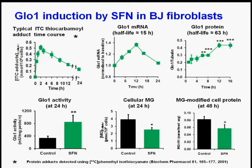The next panel shows that glyoxalase 1 messenger RNA increased up to 12 hours and then declined rather rapidly, consistent with its short half-life. The next panel shows glyoxalase 1 protein changes, which increased to 12 hours, maximizing there, and then decline very slowly thereafter, consistent with the half-life of glyoxalase 1 of 63 hours. Glyoxalase 1 activity was increased at 24 hours, consistent with the time course of higher glyoxalase 1 protein.